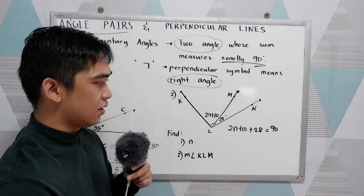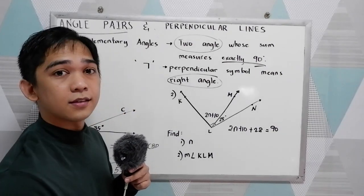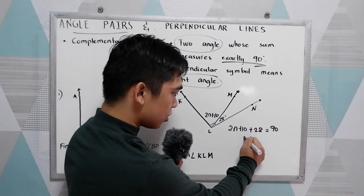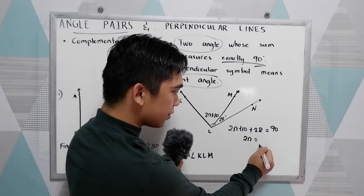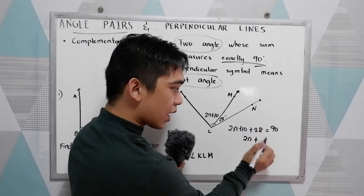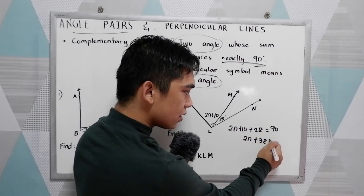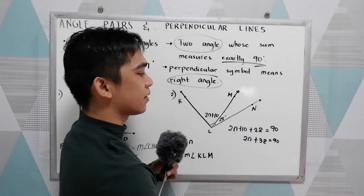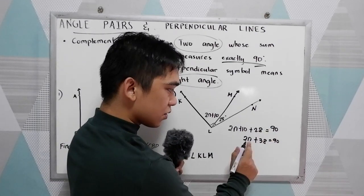Now, solve for N. So we have 2N plus 10 plus 28, that is 38, is equal to 90.